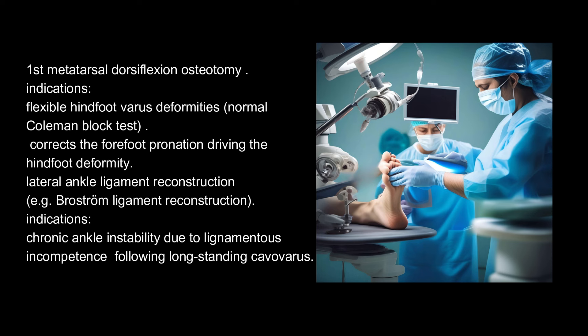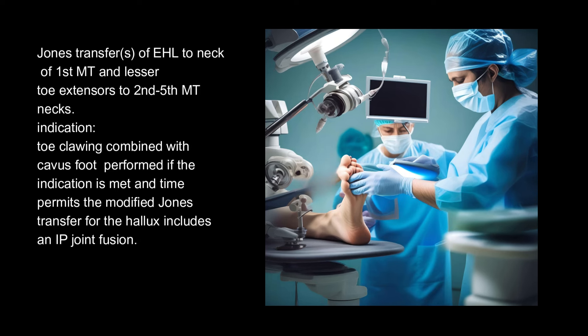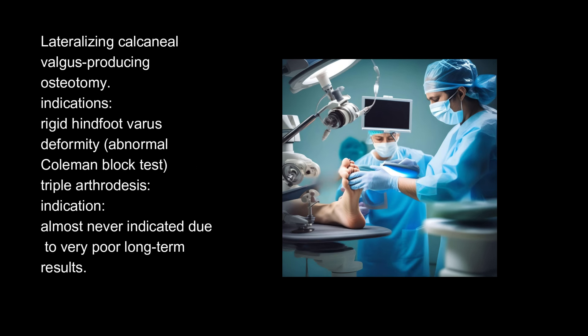Lateral ankle ligament reconstruction (e.g., Broström ligament reconstruction) is indicated for chronic ankle instability due to ligamentous incompetence following long-standing cavovarus. Jones transfer of EHL to the neck of the first metatarsal and lesser toe extensors to the second through fifth metatarsal necks is indicated for toe clawing combined with cavus foot. If the indication is met and time permits, the modified Jones transfer for the hallux includes an IP joint fusion.